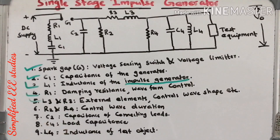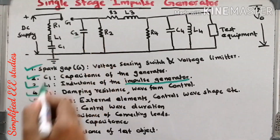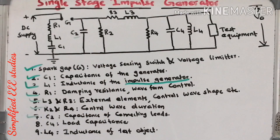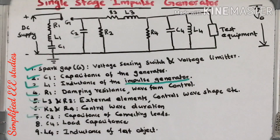R2 and R4 function to adjust the wave front as well as wave tail time. By selecting suitable values of R2 and R4, it is easy to control wave front as well as wave tail. C2 is the capacitance of connecting leads. The capacitance due to connecting leads or external elements is generally known as parasitic capacitance; C2 represents this parasitic capacitance. C4 is the load capacitance related to the test object.